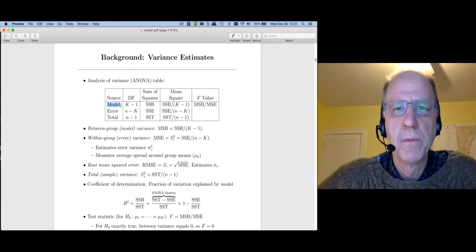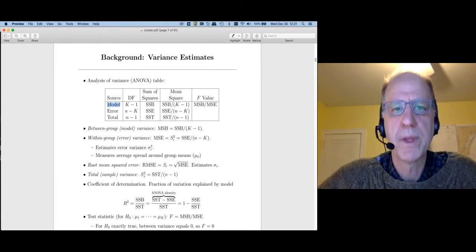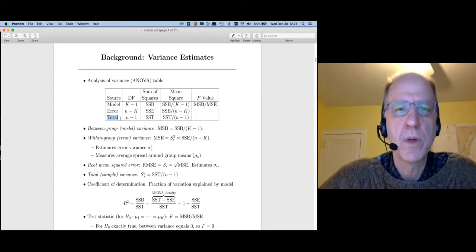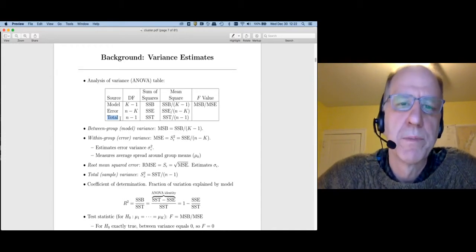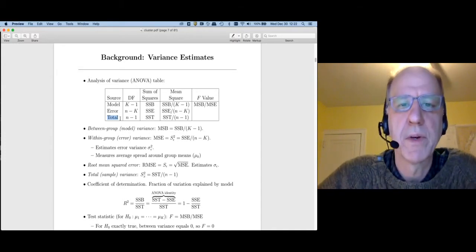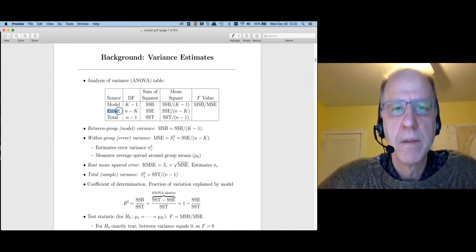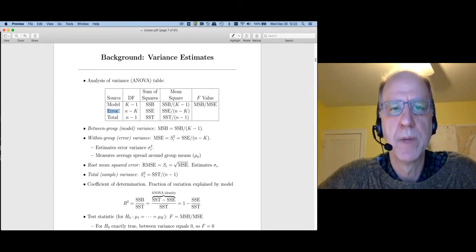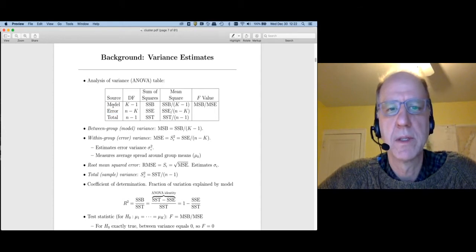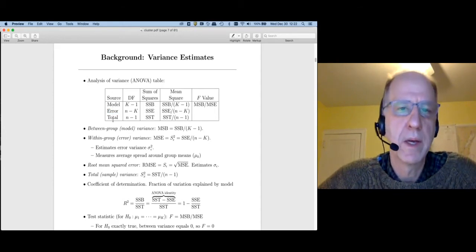So we have really three rows in this table. The first row describes what the model does. The last row describes the total variation in the data, which would be what you get under the null hypothesis, that there are no differences between the groups and we can just summarize everything with a single mean. The middle row, I like to think of as what the model doesn't do. You can also think of this as between, within, and total.